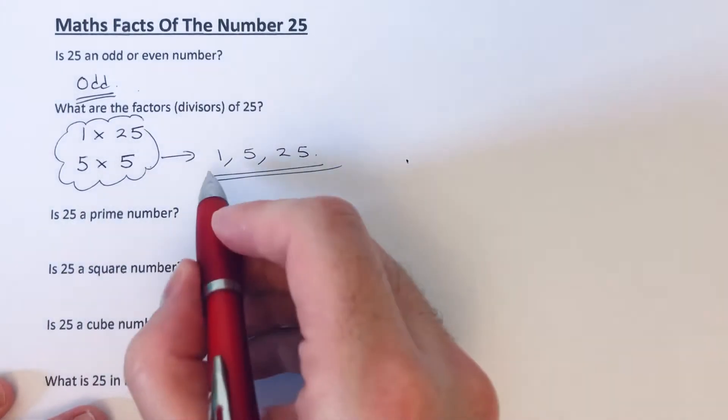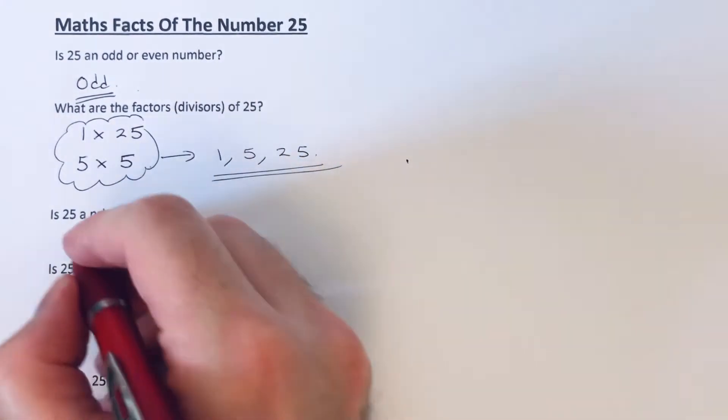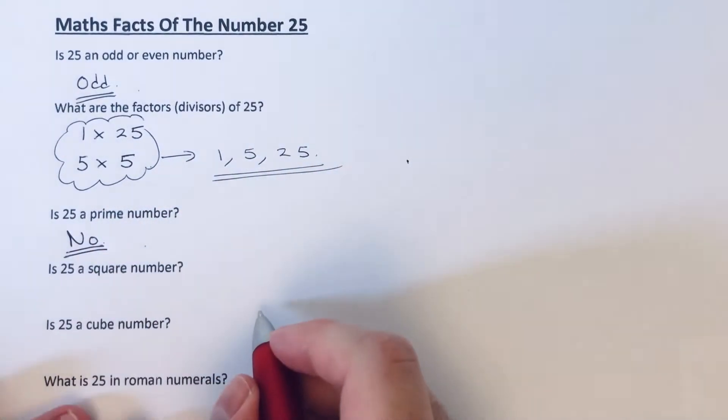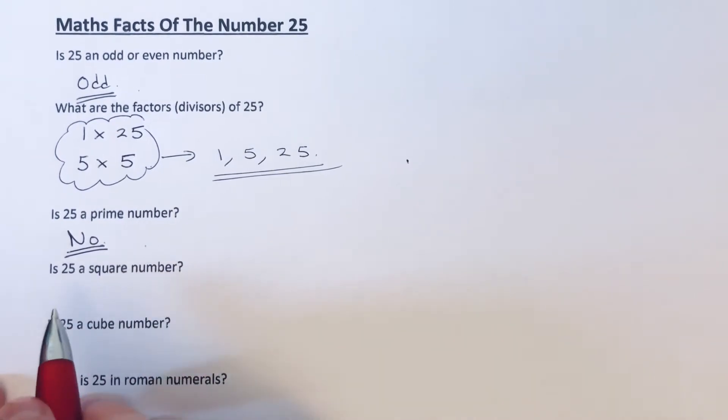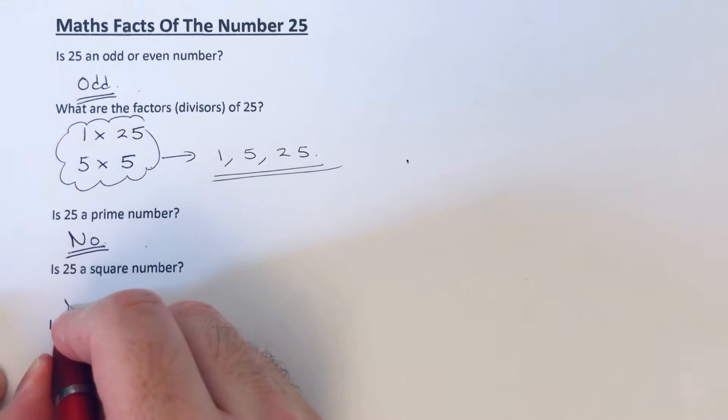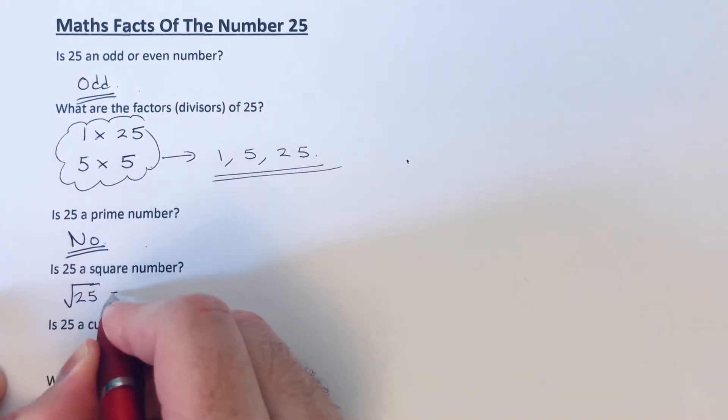Is 25 a square number? If it's a square number, you should be able to square root 25 and it should give you a whole number. If it doesn't, it's not going to be a square number. So the square root of 25...